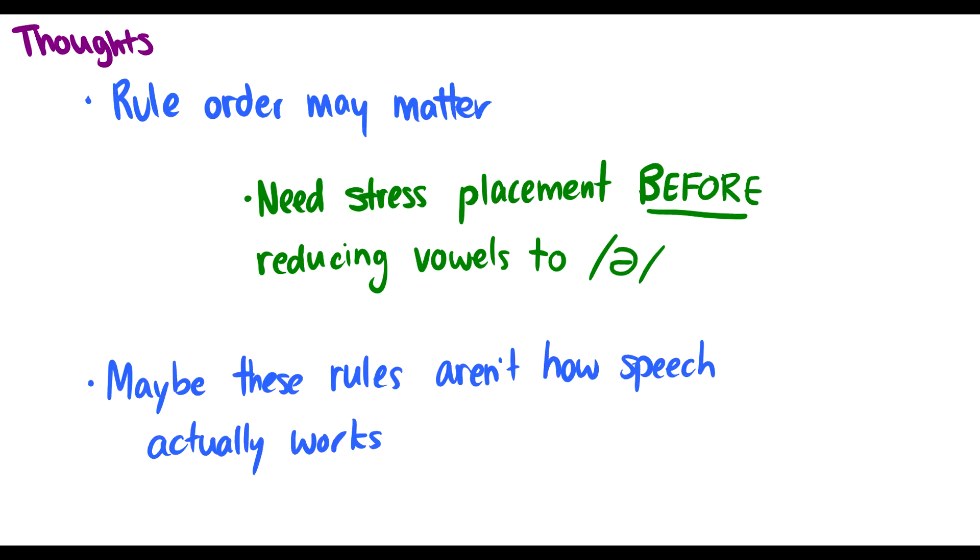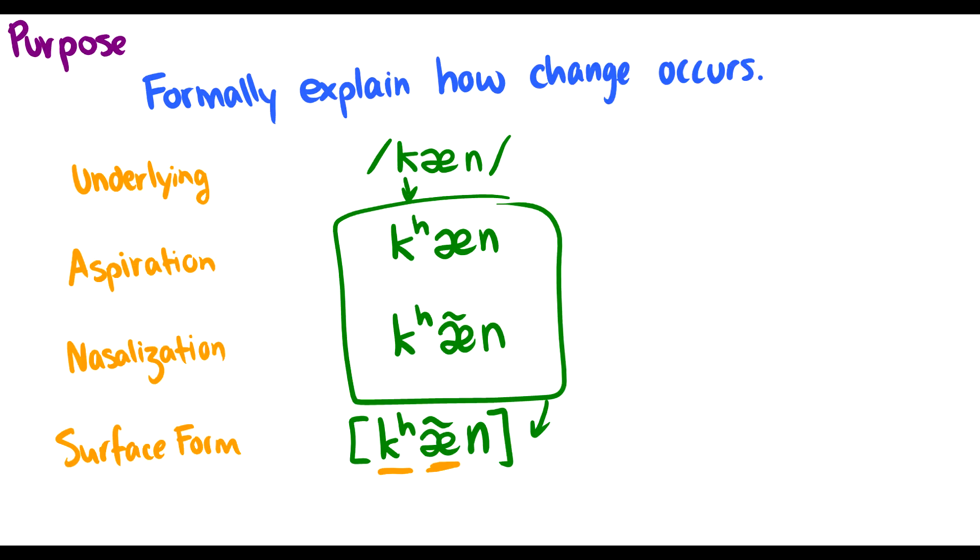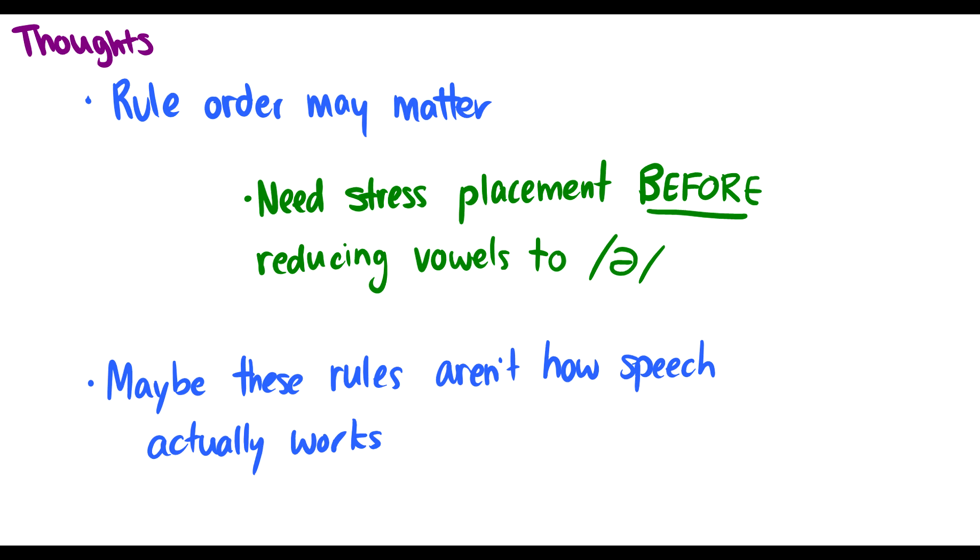It goes through this little black box where we put in an input, it pops out an output, and we have this formalized change. Okay, so that's the rough guide to how this thing works. So how do we talk about rules? Well, first of all, we have some thoughts here. Rule order may matter. So here, if I did nasalization first and aspiration later, wouldn't make a difference. However, when we work with stress and schwas, we need to put stress on before we take vowels and make them schwas.